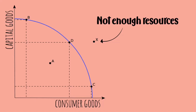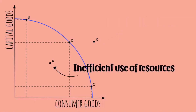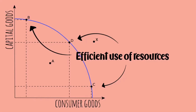On the other hand, a point inside the curve, such as point A, is where there is inefficient use of resources. Points lying on the curve, such as B, D, and C, are where resources are used efficiently.